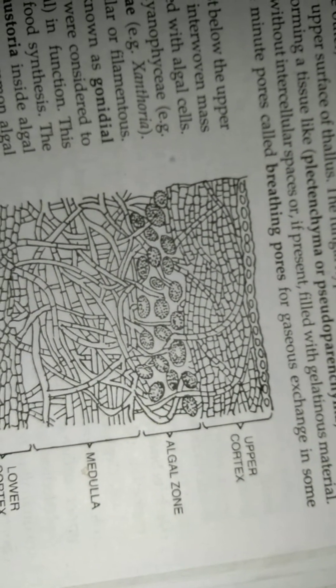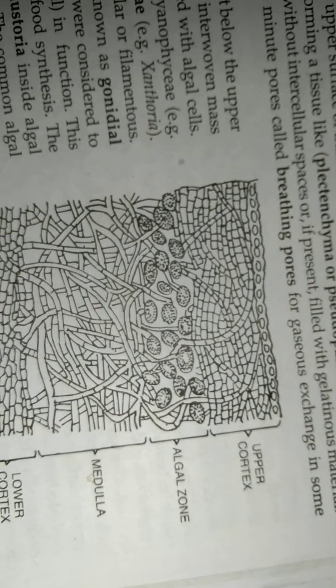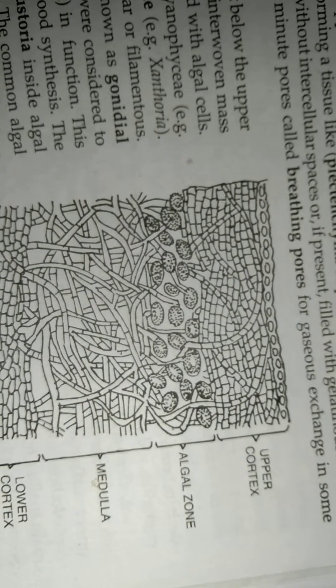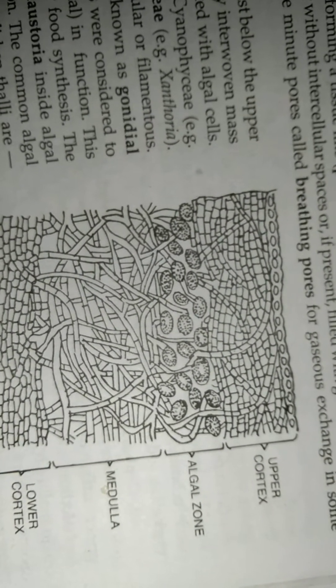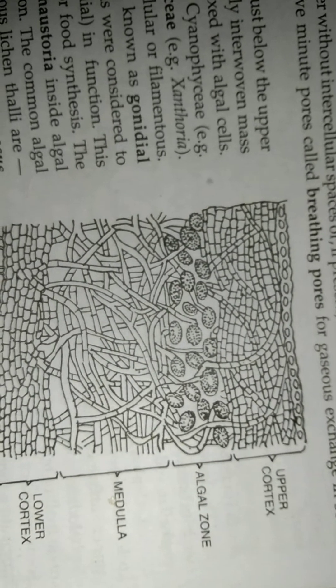Common algal genera found in various lichen thalli are Chlorella, Protococcus, Pleurococcus, Cystococcus, Trebouxia. These are unicellular green algae.